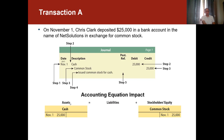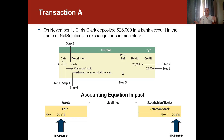Looking at how this affects the accounting equation: assets, liabilities, and stockholders' equity. Cash is increasing, so it's recorded on the debit side. Common stock, under stockholders' equity, is recorded on the credit side because it's increasing. This is how a journal entry is recorded for a transaction like that — cash is increasing so it goes on the debit; common stock is also increasing so it goes on the credit. This applies the double entry bookkeeping system where debit and credit should always be balanced with the same values.